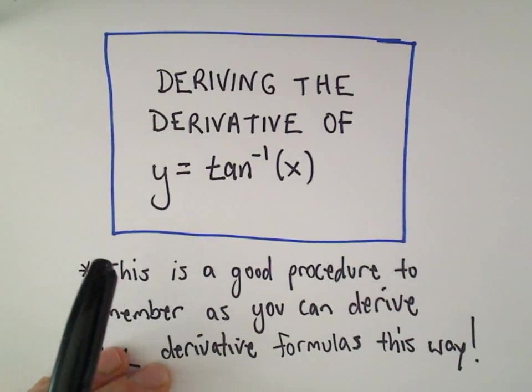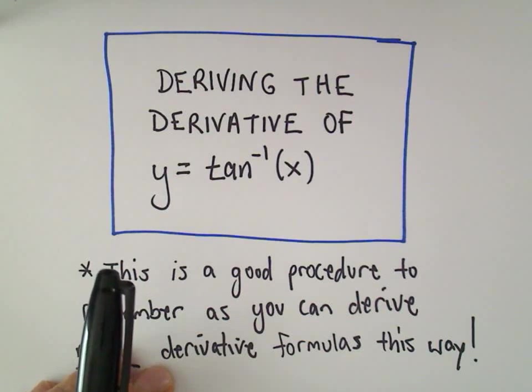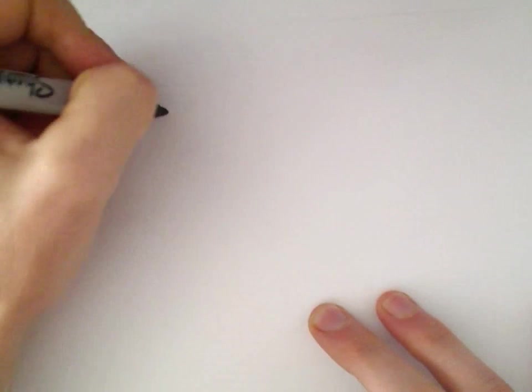A lot of books, this is how they'll justify also the derivative of, say, natural logarithm. So this is the basic procedure, and it's really not too bad at all. So what we're going to do is, we want to...